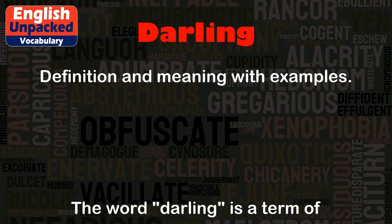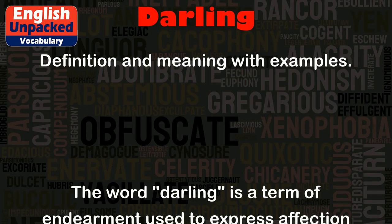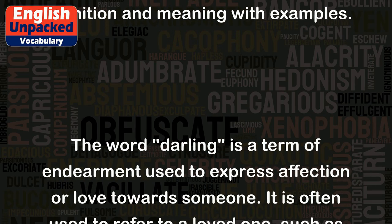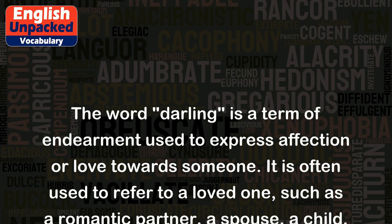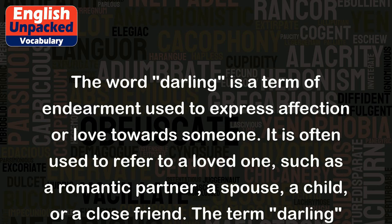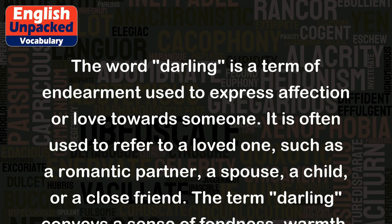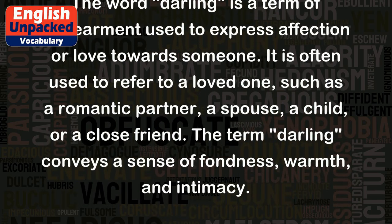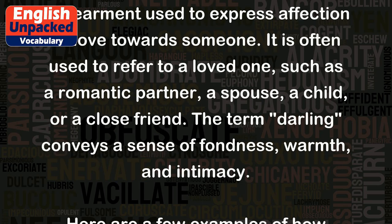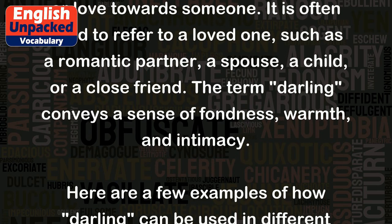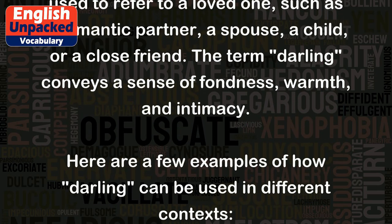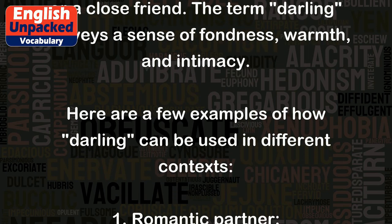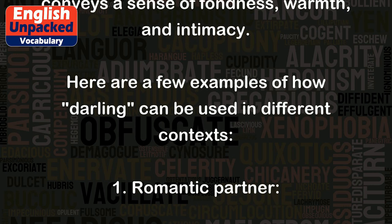Darling. The word 'darling' is a term of endearment used to express affection or love towards someone. It is often used to refer to a loved one, such as a romantic partner, a spouse, a child, or a close friend. The term 'darling' conveys a sense of fondness, warmth, and intimacy.